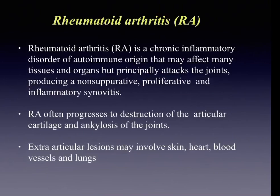Rheumatoid arthritis is a chronic inflammatory disorder of autoimmune origin that may affect many tissues and organs, but the principal organ affected is the joint, producing a non-suppurative proliferative and inflammatory synovitis. Rheumatoid arthritis progresses to cause destruction of articular cartilage and ankylosis of the joints. Apart from articular manifestations, there can be extra-articular lesions involving the skin, heart, blood vessels, and lungs.